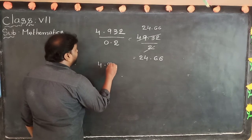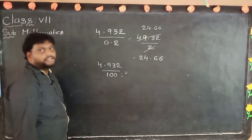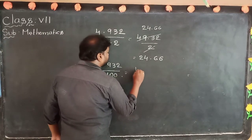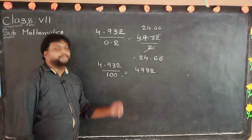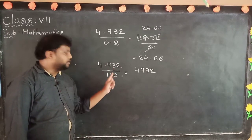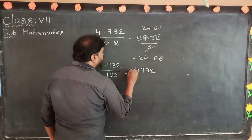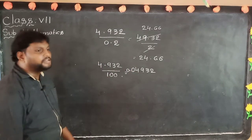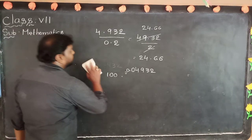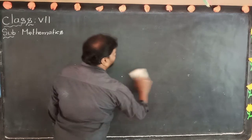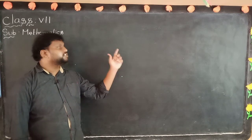For 4.932 divided by 100: the numerator already has 3 decimal digits, and we remove two zeros from denominator — total 5 decimal places. Counting 5 places from the right in 4932 gives 0.04932. This is division of decimals with powers of 10.